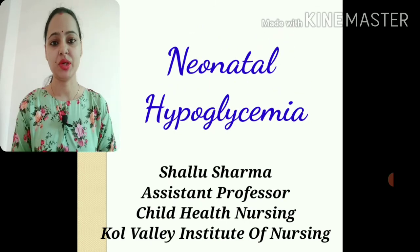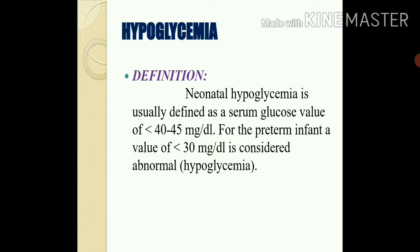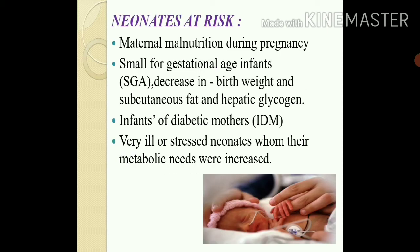Let's start with the topic neonatal hypoglycemia. The definition of neonatal hypoglycemia is usually defined as a serum glucose value of less than 40 to 45 mg per deciliter. For the preterm infant, if the glucose value is less than 30 mg per deciliter it is considered abnormal and diagnosed as hypoglycemia. For a term baby or healthy neonate, glucose level of less than 40 to 45 mg per deciliter is considered hypoglycemia.